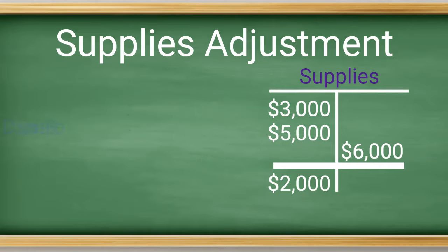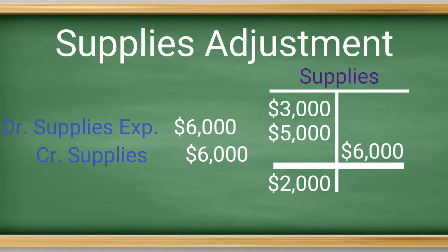Therefore, the adjusting journal entry would be a debit to supplies expense for $6,000 and a credit to supplies for $6,000.